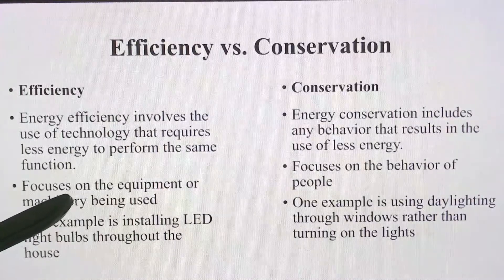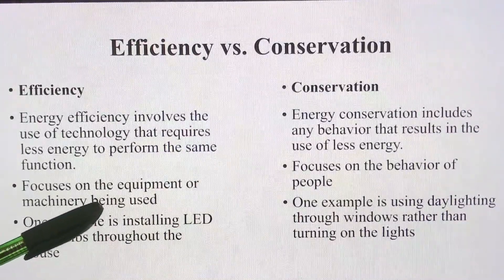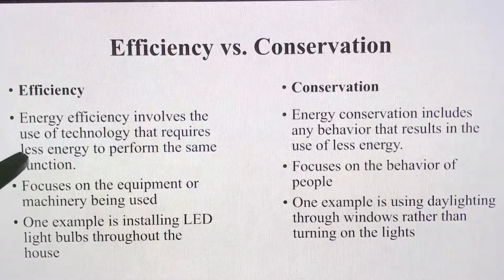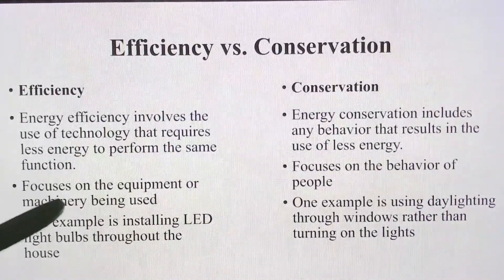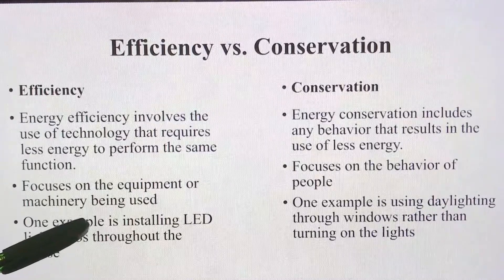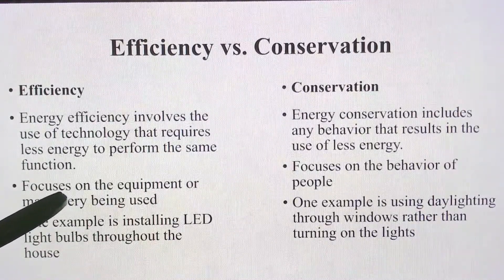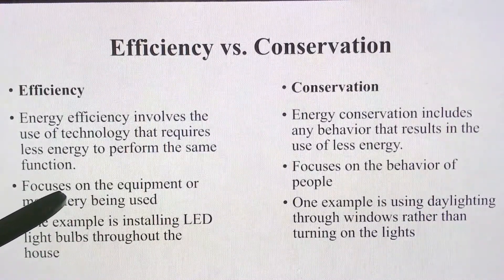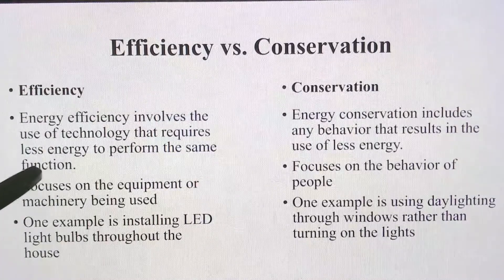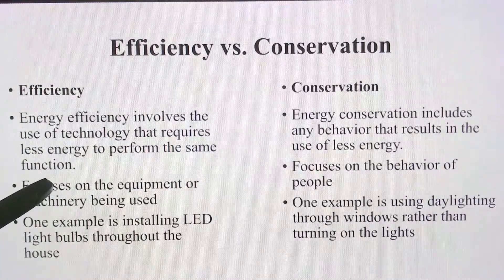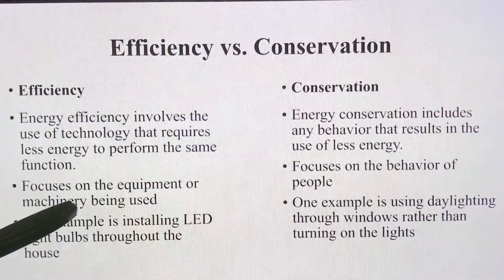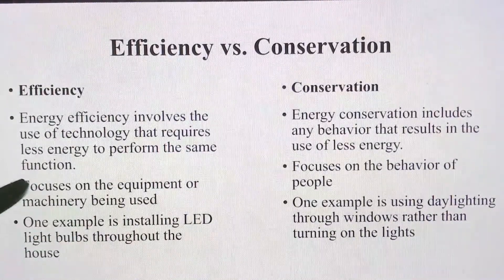Efficiency focuses on the equipment or machinery being used. To improve efficiency, the latest technology and latest machines have to be used. For example, consider 3-star ACs and 5-star air conditioners. The 5-star air conditioner consumes less energy and gives more output compared to the 3-star air conditioner.